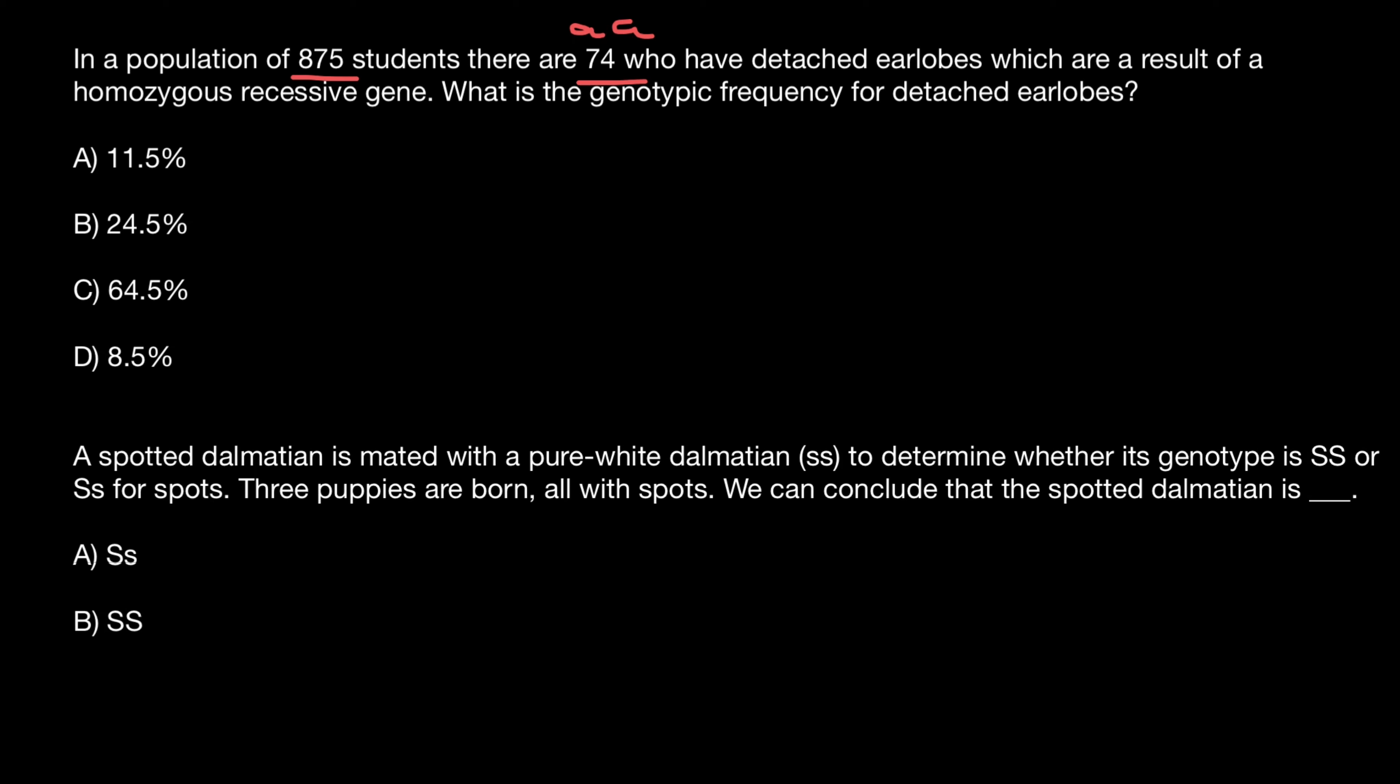875 students belong to the genotypes: homozygous dominant, heterozygous, and homozygous recessive. So this represents 100% of all genotypes. In order to find the frequency of the homozygous recessive genotype, we just have to divide 74 by the total number of students, which is 875.